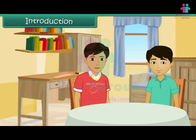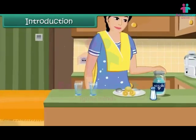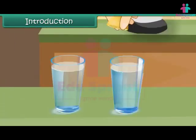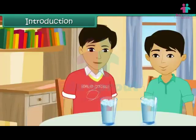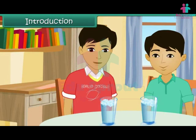Tarun is at his friend Kunal's place. Kunal's mother is preparing some lemonade for him. She squeezes some lemon juice in a glass of water, adds sugar and ice cubes, and serves it to him. He can see no traces of sugar and lemon juice in the water. He sees the ice cube floating on the top. He is amused to see that different substances have different characteristics.